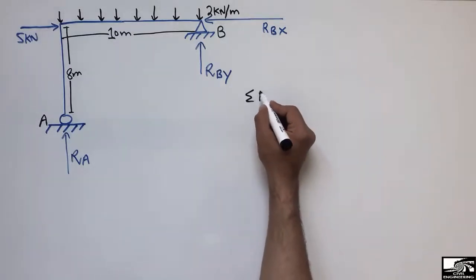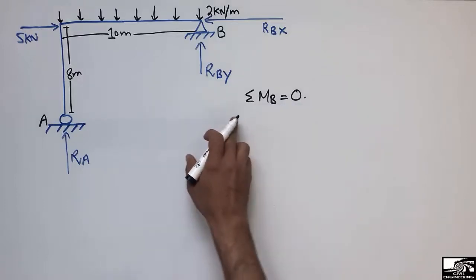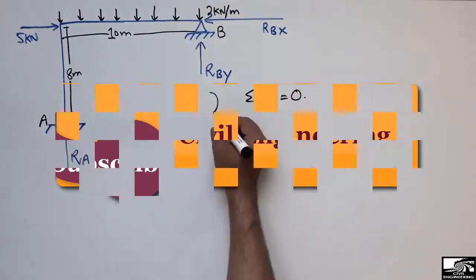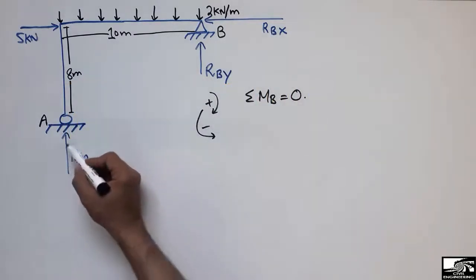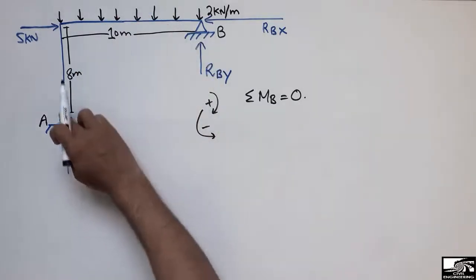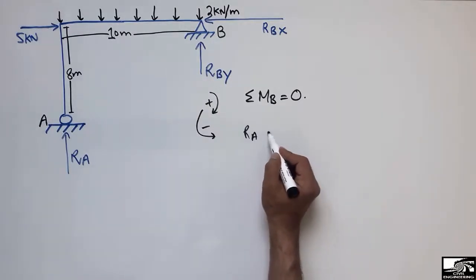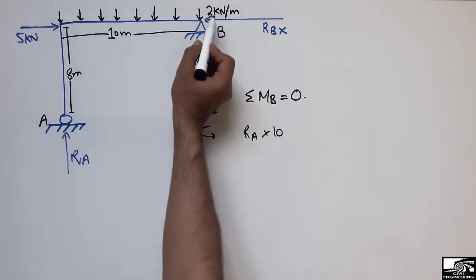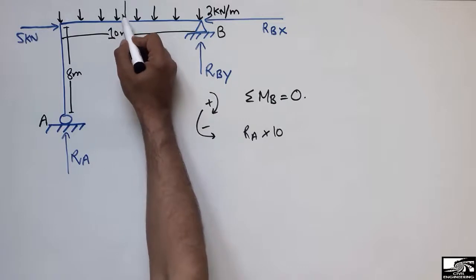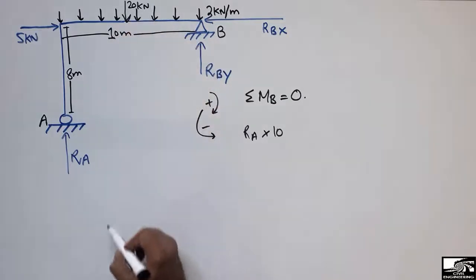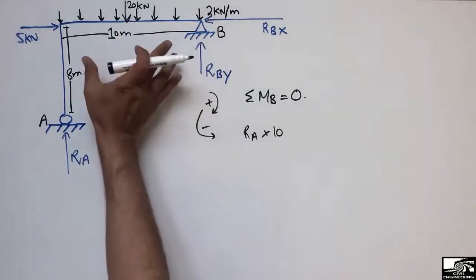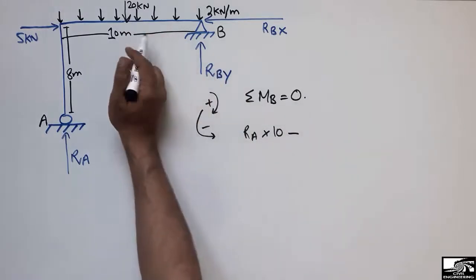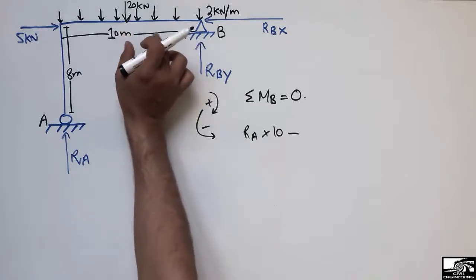To find support reactions, we take the summation of moments at point B equal to zero. Assuming clockwise moment is positive and anti-clockwise is negative: RA acts clockwise with a moment arm of 10 meters, giving RA × 10. The 2 kN/m distributed load over 10 meters gives a concentrated load of 20 kN, which acts anti-clockwise, so it is negative: −20 × 5 (the moment arm at center).